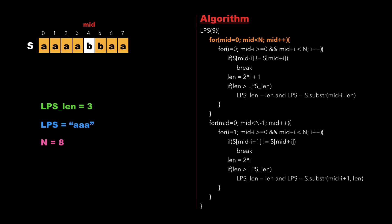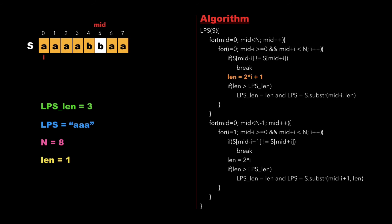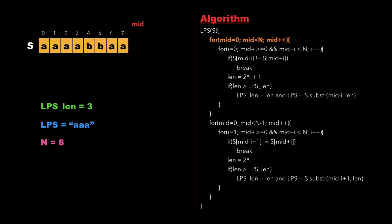The process continues until mid reaches the end of the string. Finally, mid=8, which is not less than n, so we exit the first for loop. At this point, lps_length=3 and lps='AAA'. We now start the second for loop, which handles even-length palindromes.